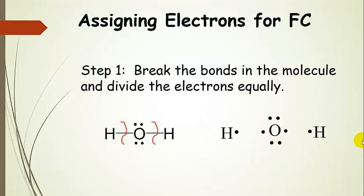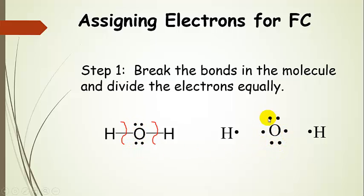The first thing we do when assigning electrons for formal charge is to break the bonds and divide the electrons equally. Remember, a single bond has two electrons. So here's water — we break that bond and divide it equally: hydrogen gets one and oxygen gets one from each bond. Oxygen keeps its lone pairs. The result is six electrons around oxygen and one electron on each hydrogen.